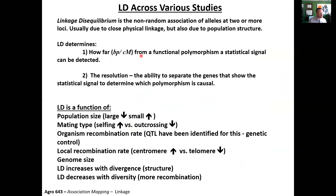If we have really small linkage disequilibrium, we can potentially dissect down to the single gene level. However, if we have really long LD, we're going to detect maybe whole chromosomes, which changes our resolution. Linkage disequilibrium is really a function of how big the population is and what type of mating system is used. If you think about a selfing species, they're not recombining and breaking up LD. With outcrossing species, we see LD dramatically decrease.